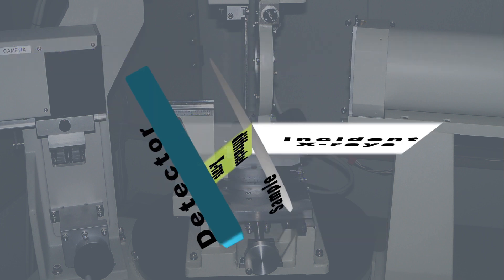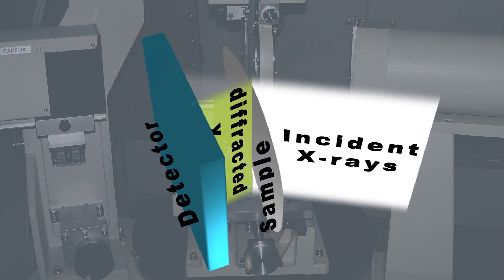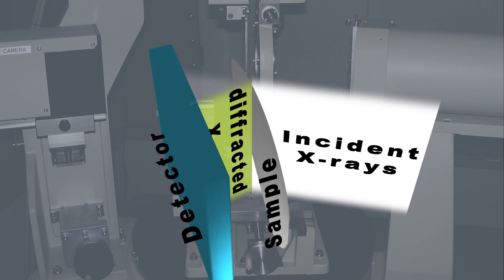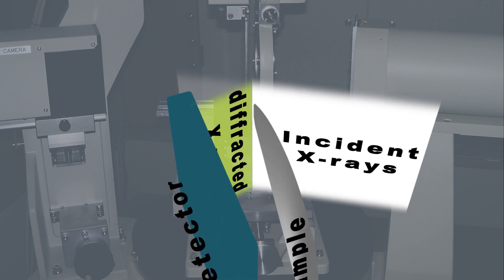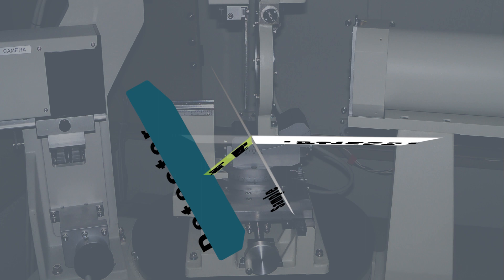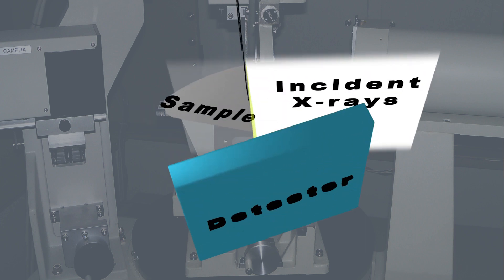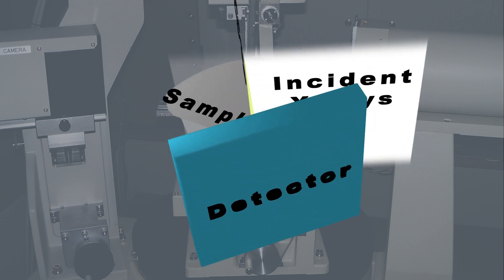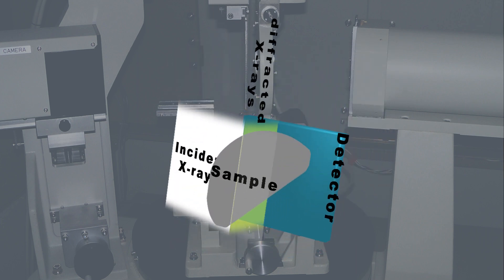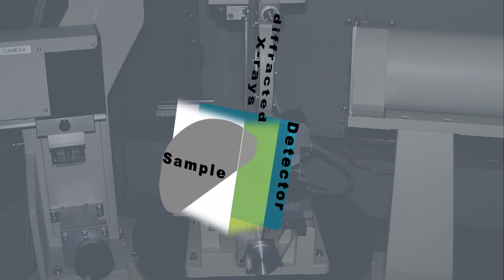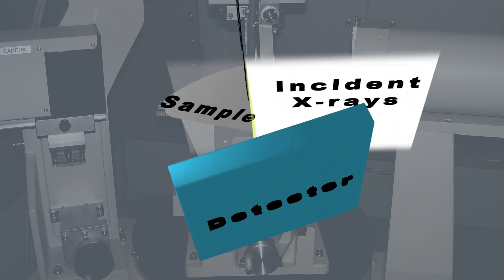Transmission topography uses a higher energy X-ray source, molybdenum K-alpha for our instrument, and diffracts through the sample with a steep incidence angle. Reflection topography uses a low energy X-ray source, copper K-alpha for our system, and diffracts from the surface of the sample with a shallow incidence angle and a diffraction angle close to 90 degrees from the sample surface.